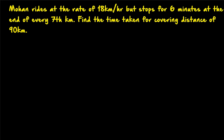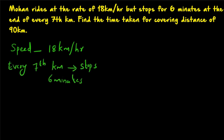Mohan is riding at the rate of 18 km per hour. His speed is 18 km per hour, but he stops for 6 minutes at the end of every 7 km. So at the end of every 7 km he stops for 6 minutes. We need to find the time taken for covering a distance of 90 km.